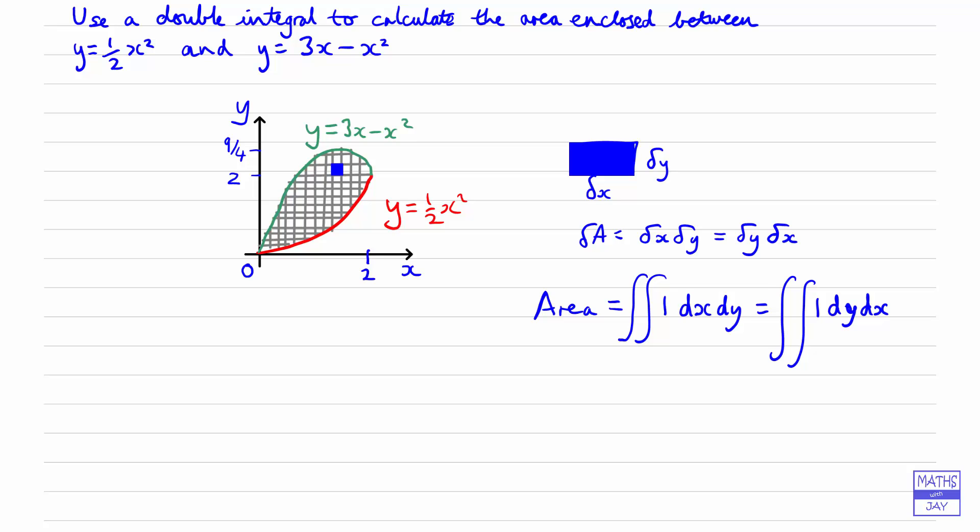You'll notice that when I drew in the vertical lines, I was going from y equals a half x squared up to y equals 3x minus x squared. I was joining the red curve to the green curve, so the vertical lines were really easy. The horizontal lines are a little more difficult because we didn't always start on one curve and go across to the other curve. At the top of this area, we're starting on y equals 3x minus x squared and ending up on the same curve.